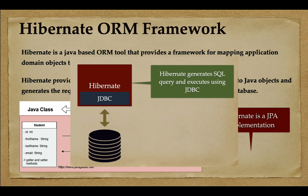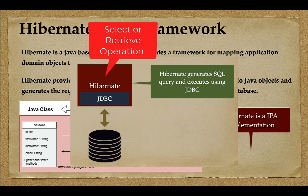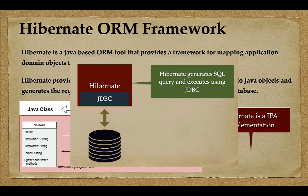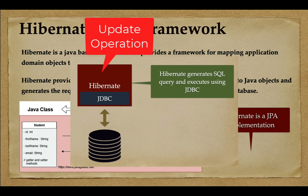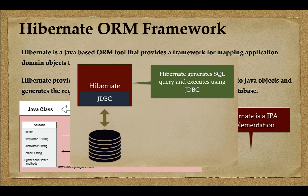For example, if we want to retrieve a record from the database table using Hibernate, it will create a SELECT SQL query behind the scenes and use JDBC to execute it. Similarly, if we want to update a record in a database table using Hibernate, it will generate the UPDATE SQL query and use JDBC to execute that query with respect to the database.